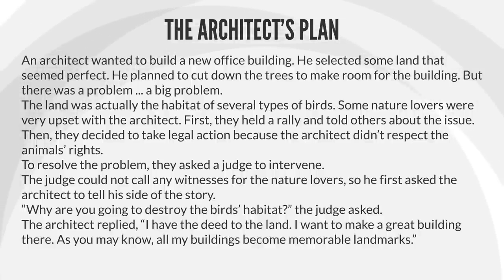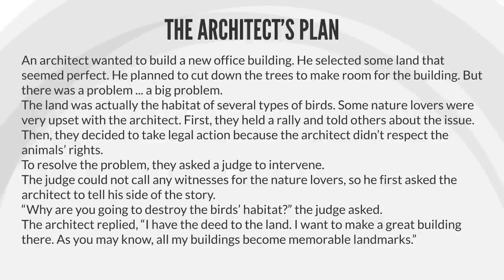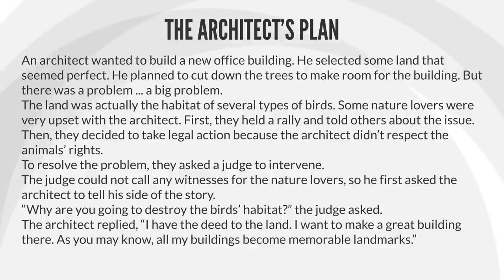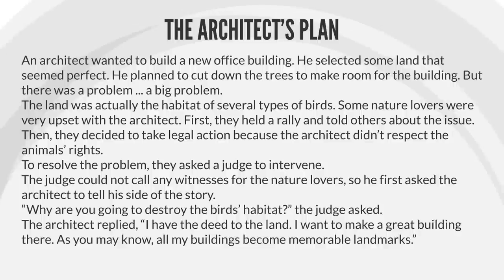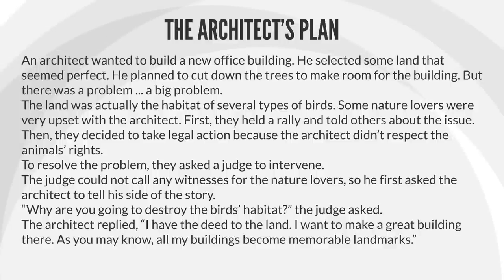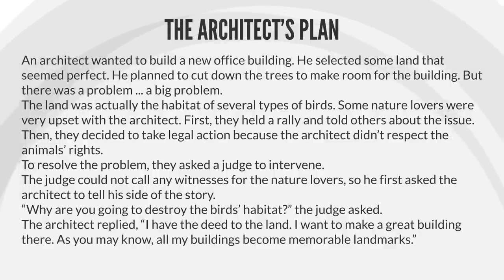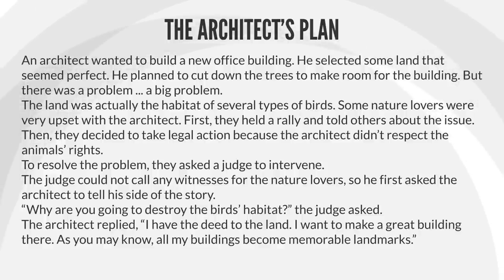The Architect's Plan. An architect wanted to build a new office building. He selected some land that seemed perfect. He planned to cut down the trees to make room for the building. But there was a big problem. The land was actually the habitat of several types of birds. Some nature lovers were very upset with the architect. First, they held a rally and told others about the issue. Then they decided to take legal action because the architect didn't respect the animals' rights. To resolve the problem, they asked a judge to intervene.